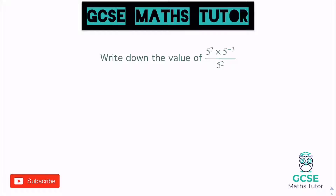Slightly different question here. It says: write down the value of five to the power of seven times five to the power of negative three, all divided by five squared. Now, value doesn't mean to write it as a power — so we're not going to have it as something like five to the power of something. Instead we're going to write down what the actual value is.